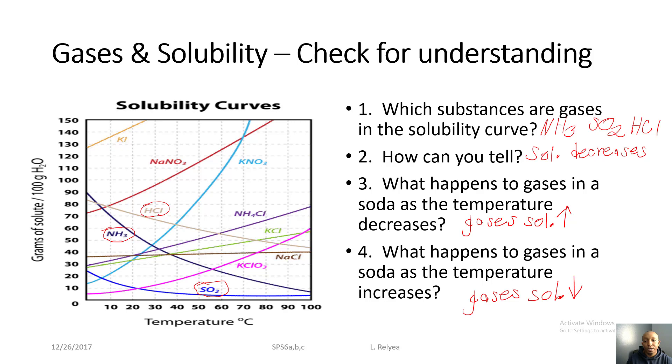Another way to check is by looking at the individual elements: nitrogen, hydrogen, sulfur, oxygen, hydrogen, and chlorine — all of those elements are gases.